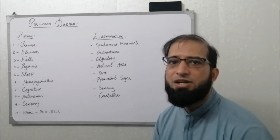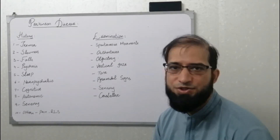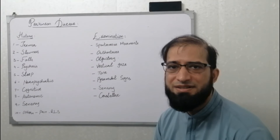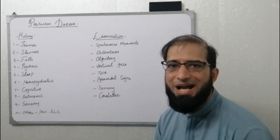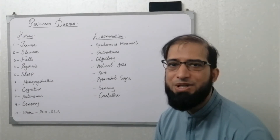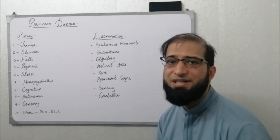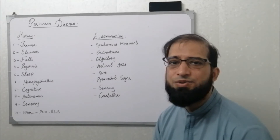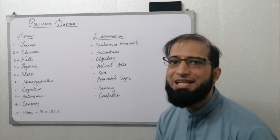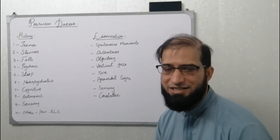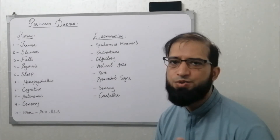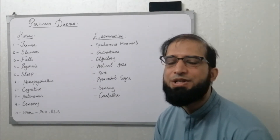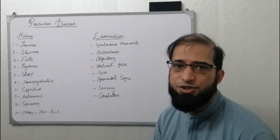Sleep is another symptom that may go unnoticed. Common presentations include insomnia or hypersomnia. Importantly, REM sleep behavior disorder (RBD) may present many years before other Parkinson's disease symptoms. RBD involves abnormal shouting and movements, usually in the latter half of the night — around 2–3 a.m. — where patients act out their dreams, and the spouse is usually the first to notice.